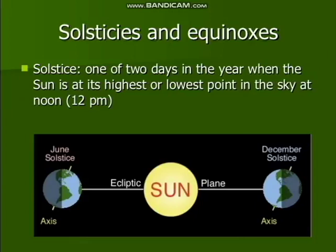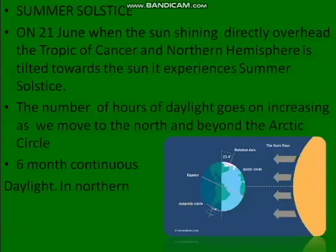What do you mean by solstice? It is one of two days in the year when the sun is at its highest or lowest point in the sky at 12 o'clock. That is called the solstice.